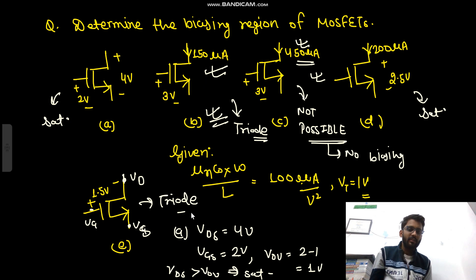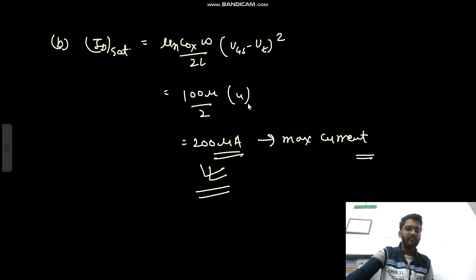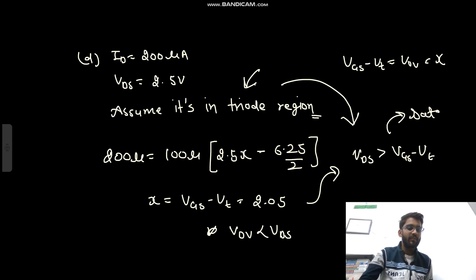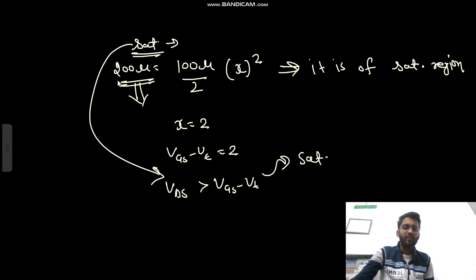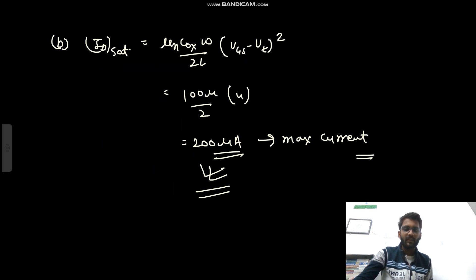To summarize: if you have the VGS value, you can derive the saturation current and check whether the actual current is less than or equal to the maximum. If you only have VDS, assume triode region first and solve — if the result implies saturation, then verify using the saturation assumption. Using these steps you can determine the region of operation for any MOSFET configuration.